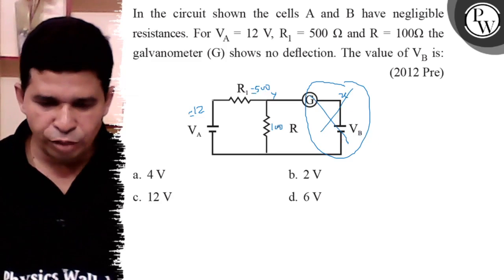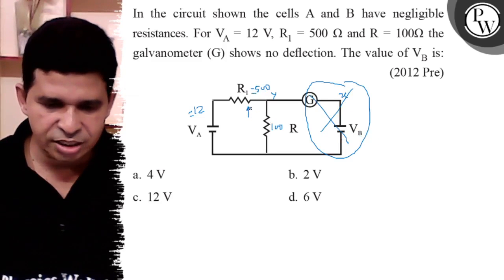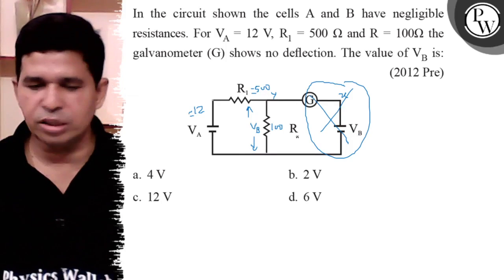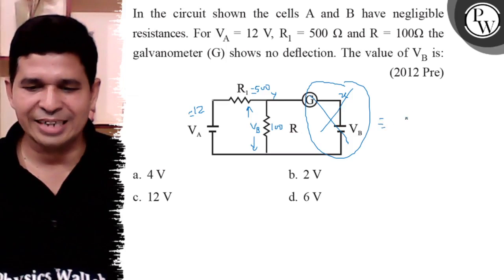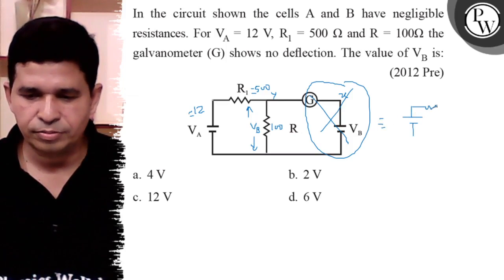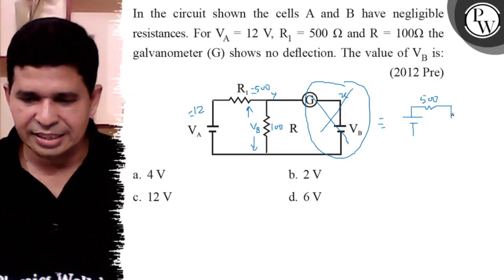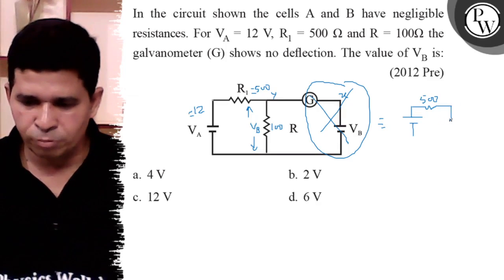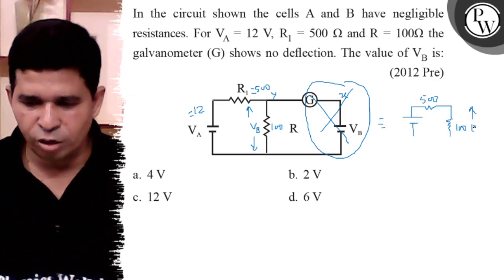So VB is distributed across 100 ohm. The equivalent circuit, after removing that part, has R1 = 500 ohm and the 100 ohm resistance in series. We have to determine VB across the 100 ohm resistance.